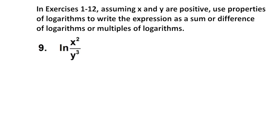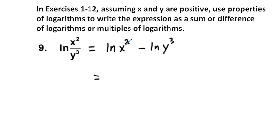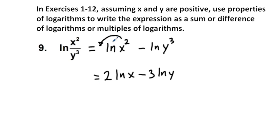Next, problem 9. We have ln — the natural logarithm. We rewrite the natural logarithm of a quotient as the natural logarithm of the numerator, x squared, minus the natural logarithm of the denominator, y cubed. Next, we apply the power property: we move the exponent 2 in front of ln(x), and we rewrite ln(y³) as 3·ln(y). So our answer is 2·ln(x) − 3·ln(y).